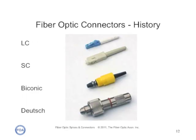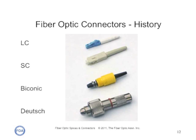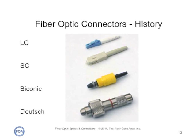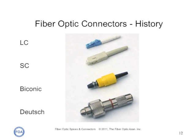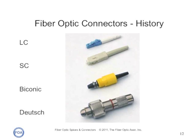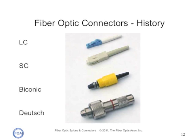Fiber optic connectors provide mechanical protection for the fiber and a good interface for mating two fibers or mating a fiber to an active device. Over the last 30 years, connectors have become much smaller and at the same time much lower in loss. From the Deutsch connector at the bottom, through the Biconic, the SC, and the LC, connectors are about one-tenth the size of what they used to be, and the Deutsch connector, which had a loss of well over one dB, is 10 times more loss than you can expect with a typical LC or SC connector today.